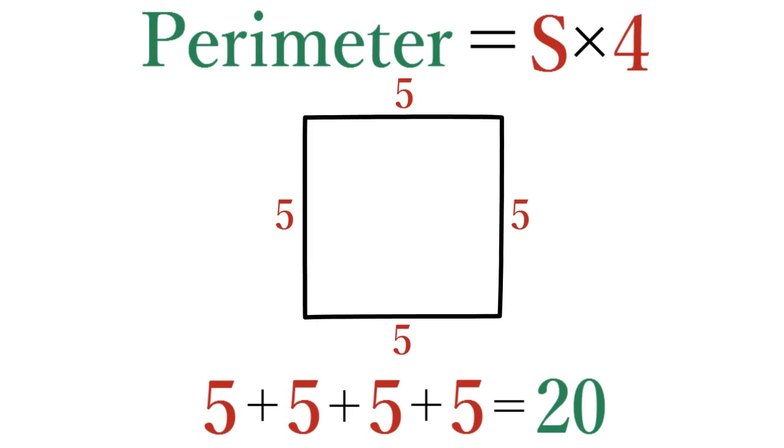So, in general, the formula for the perimeter of a square is s times 4. That is, the side of the square multiplied by 4.